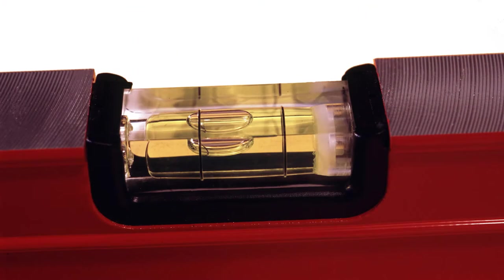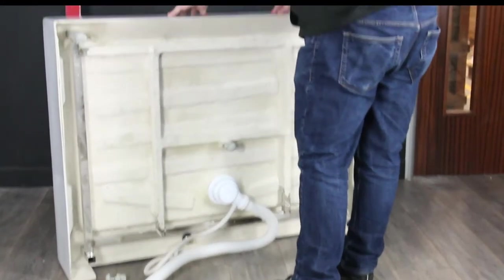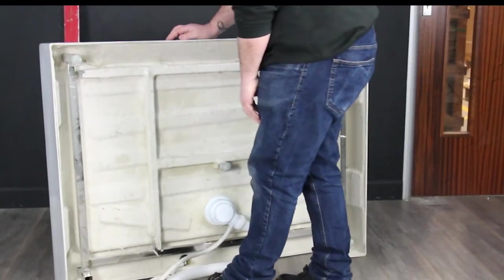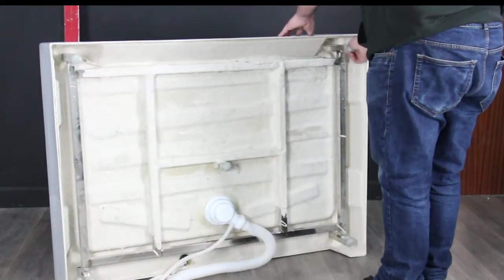To level the tray, push it into its final resting position then use a spirit level and see where the bubble sits. If it sits between the two lines, perfect. If not, lift the tray up onto its side and change the elevation of the adjustable feet by either screwing them in or unscrewing them.